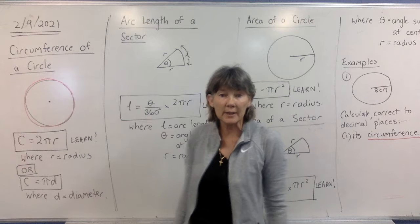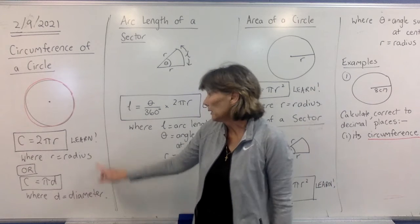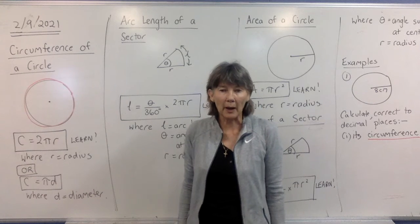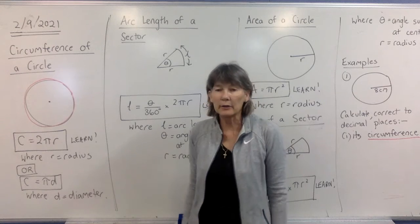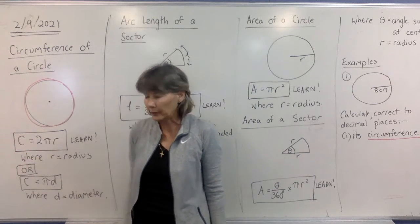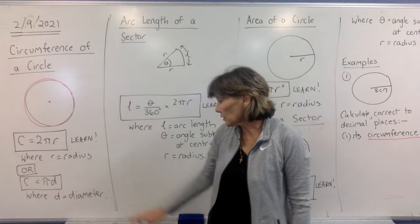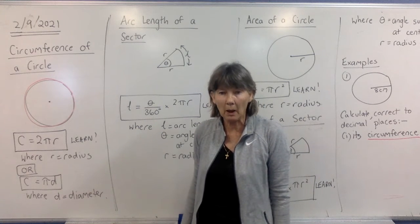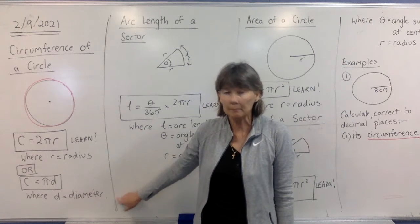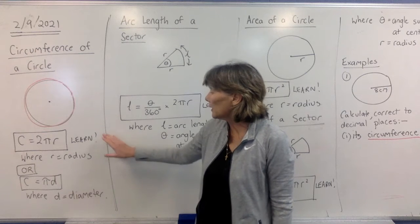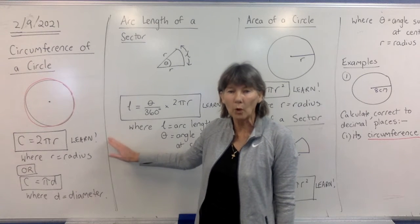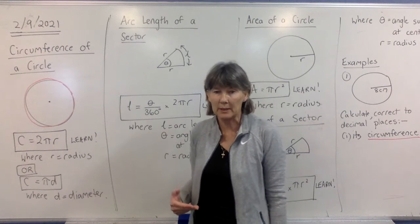The formula for the circumference of a circle you should already know is C equals 2πR, where R is the radius and C stands for circumference. You could also use the other formula, C equals πD, where D is the diameter. I tend to use the one with R more likely because all the other formulas involve R.